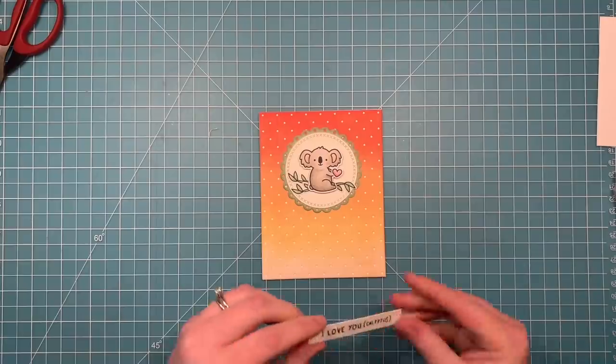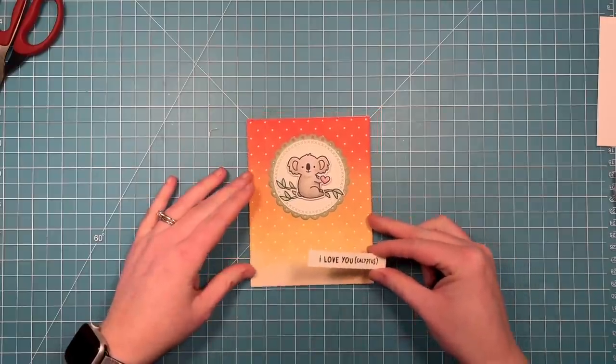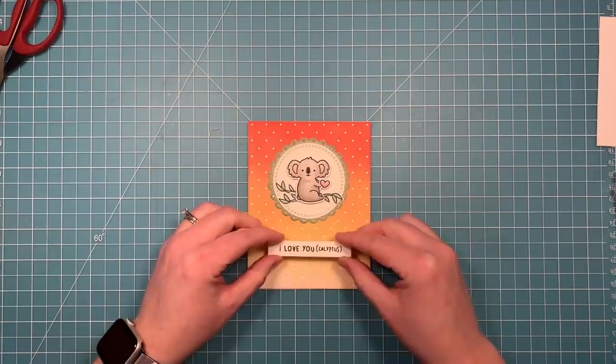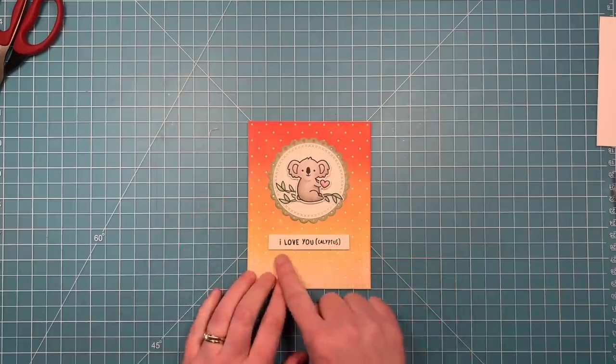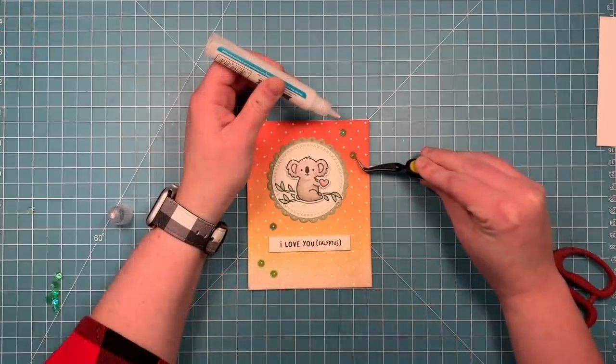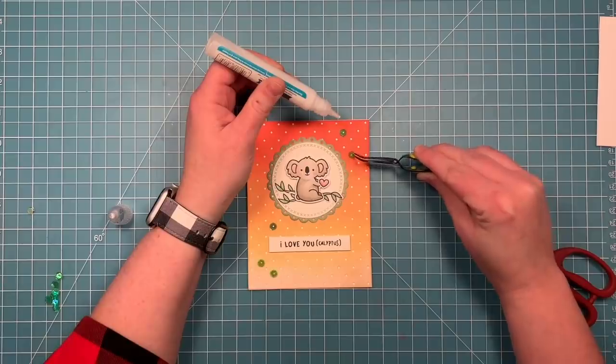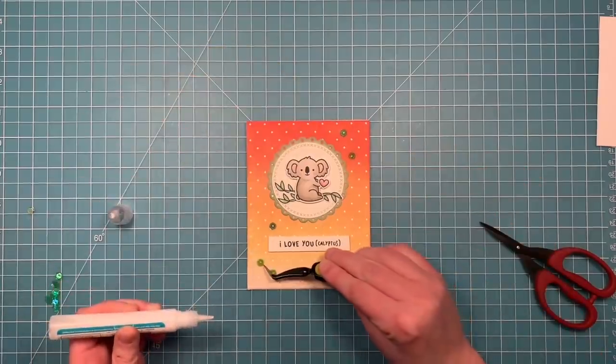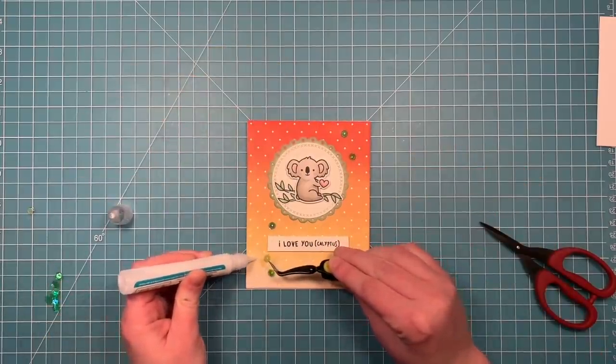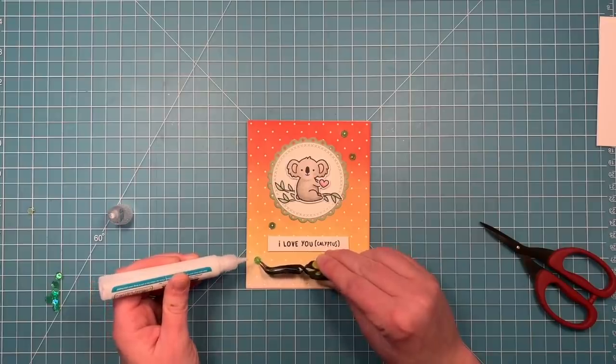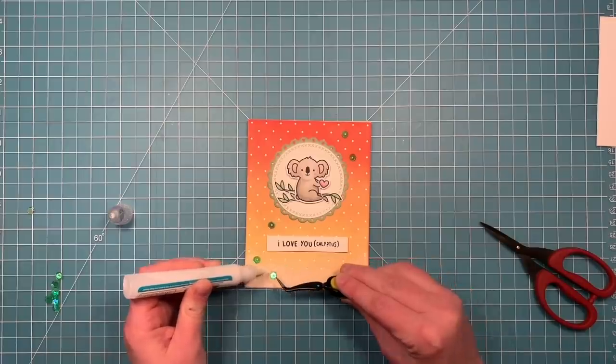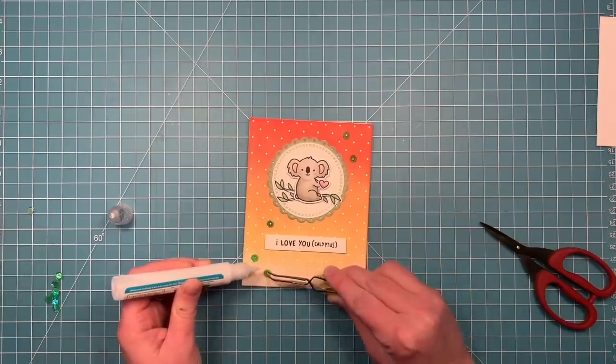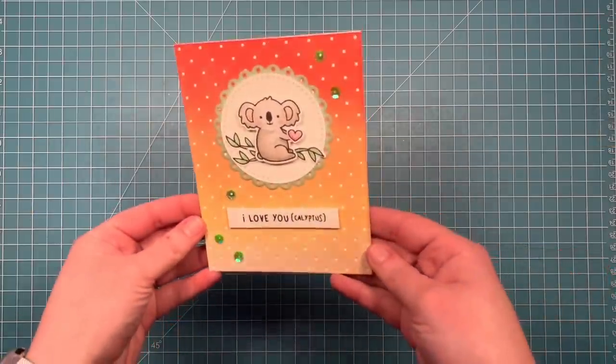I've already glued the circle to the card base. I seem to have missed that part in my video, but I used liquid glue to glue down the green scallop circle, that whole assembly, to the card base. I'm using the dots on the background as a guide to make sure that my sentiment is nice and straight. I'm also using the dots on the background as a guide on where to put these little translucent green sequins as some added embellishment.